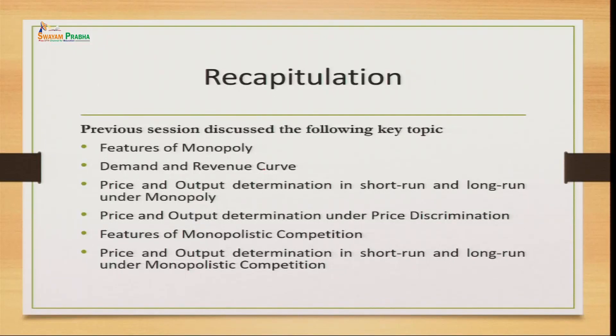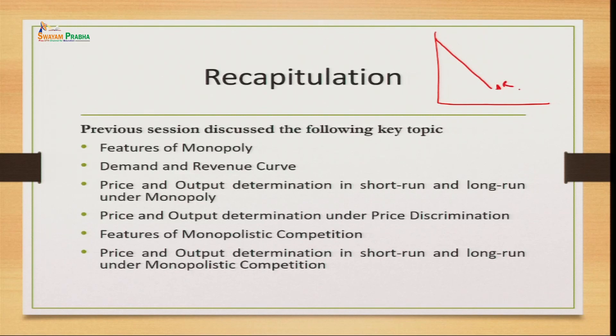Entry under the monopoly market has a restriction, and the monopolist also has an advantage of price discrimination. He is the price maker — he can make independent decisions regarding prices and output of the firm, and he can discriminate among prices by charging different prices of the same commodity from different consumers. Demand in the monopoly market is highly inelastic because the seller is the single seller and does not have a close substitute, so the demand curve is downward sloping and steeper.